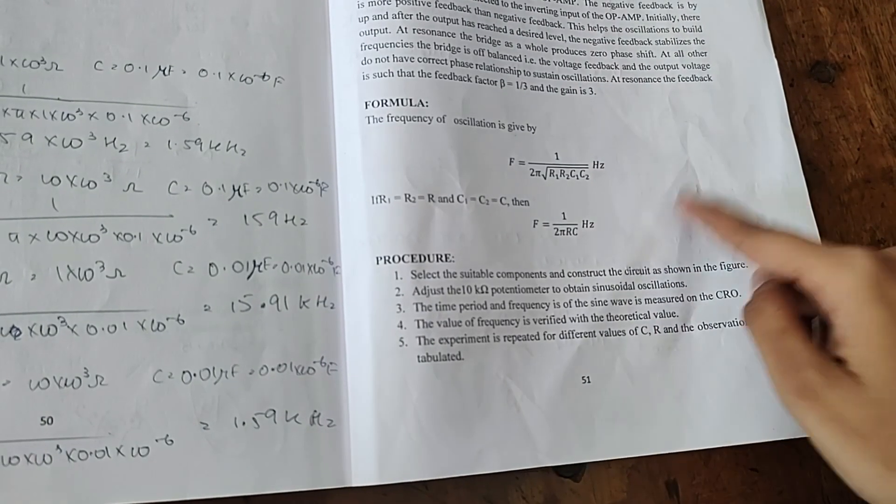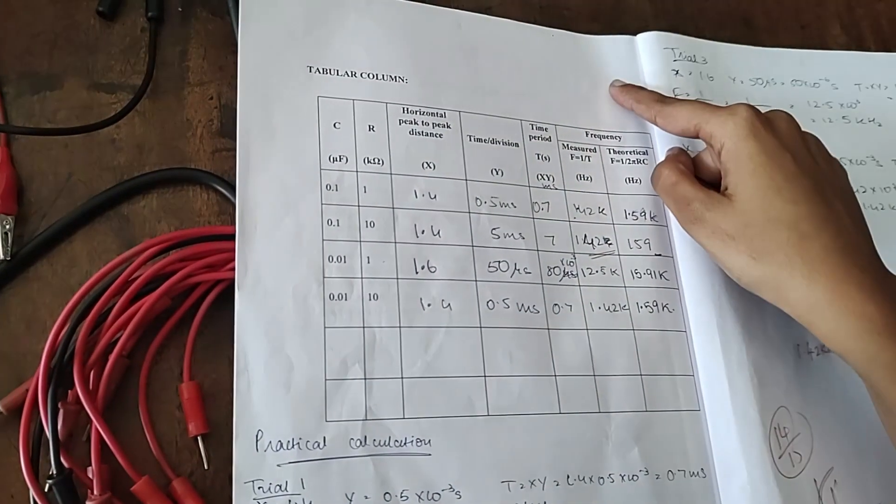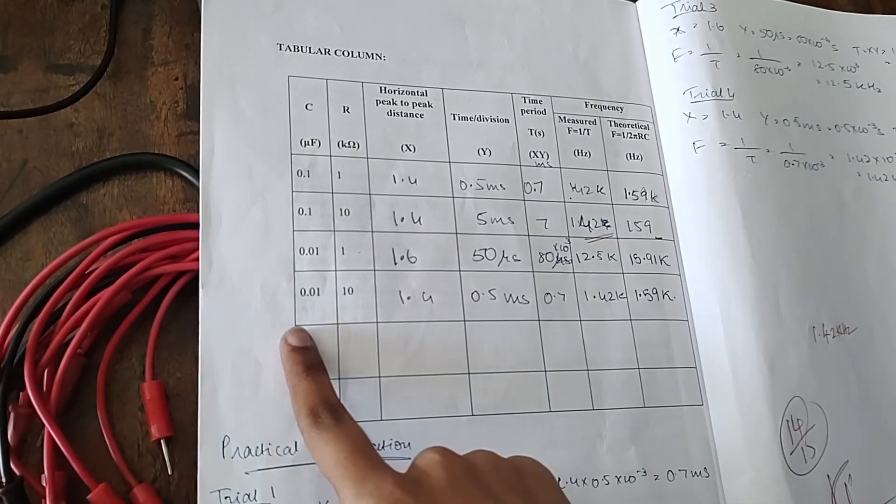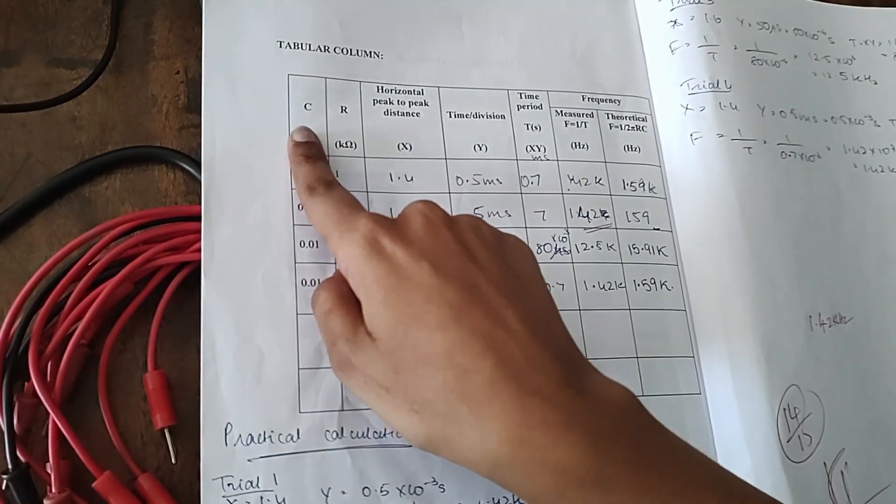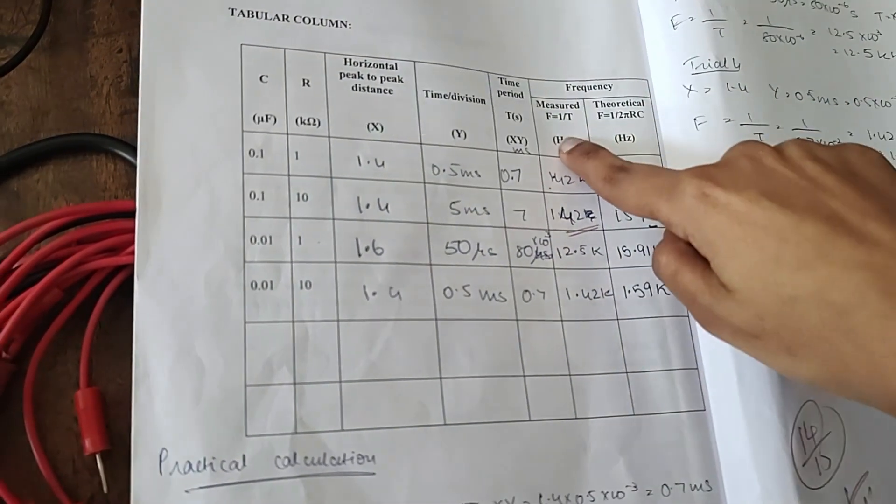R1 and R2, C1 and C2 will be the same, so we'll be using this formula. You need to draw this table. You need to take four trials for different combinations of R and C, and then you'll calculate the theoretical frequency and then the measured frequency.